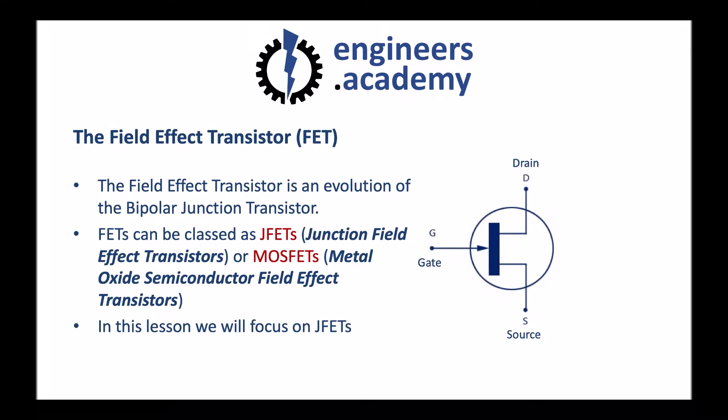First of all, the naming of the connections to the transistor is different on a FET as opposed to a bipolar junction transistor. When we looked at bipolar junction transistors, the connections were labelled as the emitter, the collector, and the base. Here they're labelled as the gate, the drain, and the source.